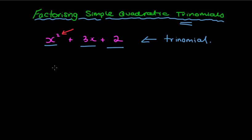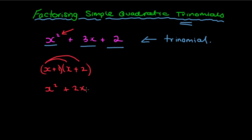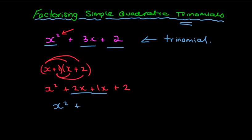You might remember if you looked at expanding brackets like this: x plus 1, times x plus 2. x times x gives x squared — it's a quadratic automatically. x times 2 is 2x, 1 times x is 1x, and 1 times 2 is 2. Remember, quad means 4, and we get those 4 terms. But we can simplify: 2x and 1x makes 3x, which gives x squared plus 3x plus 2.